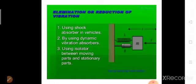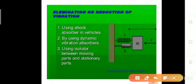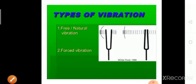Next we will see how we can reduce vibration. We cannot eliminate vibration 100% from any system, but we can try to reduce it. Different techniques include using shock absorbers in vehicles, vibration absorbers, and isolators — these are all examples of techniques to reduce vibration.